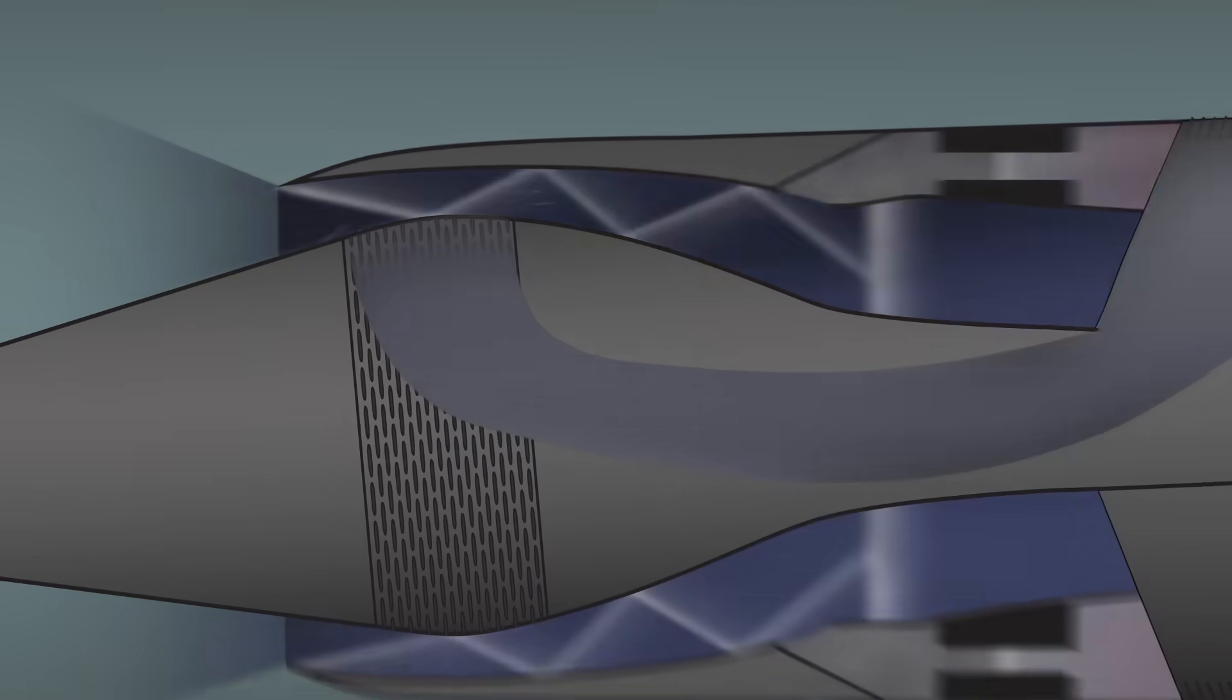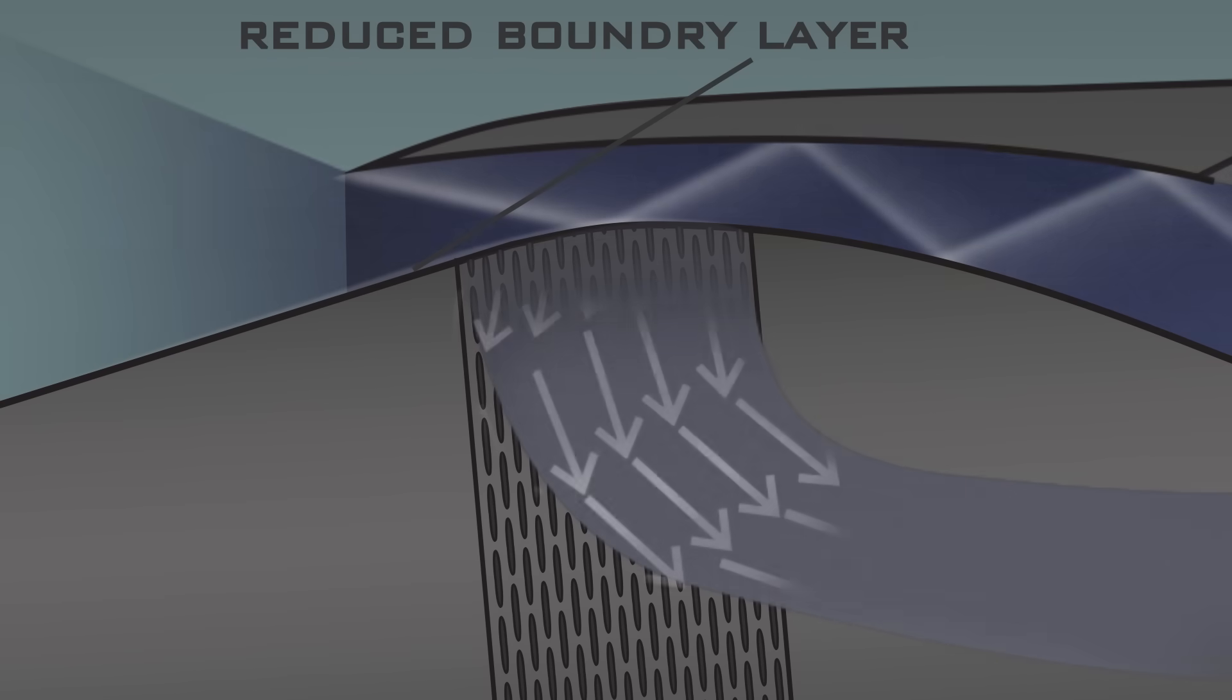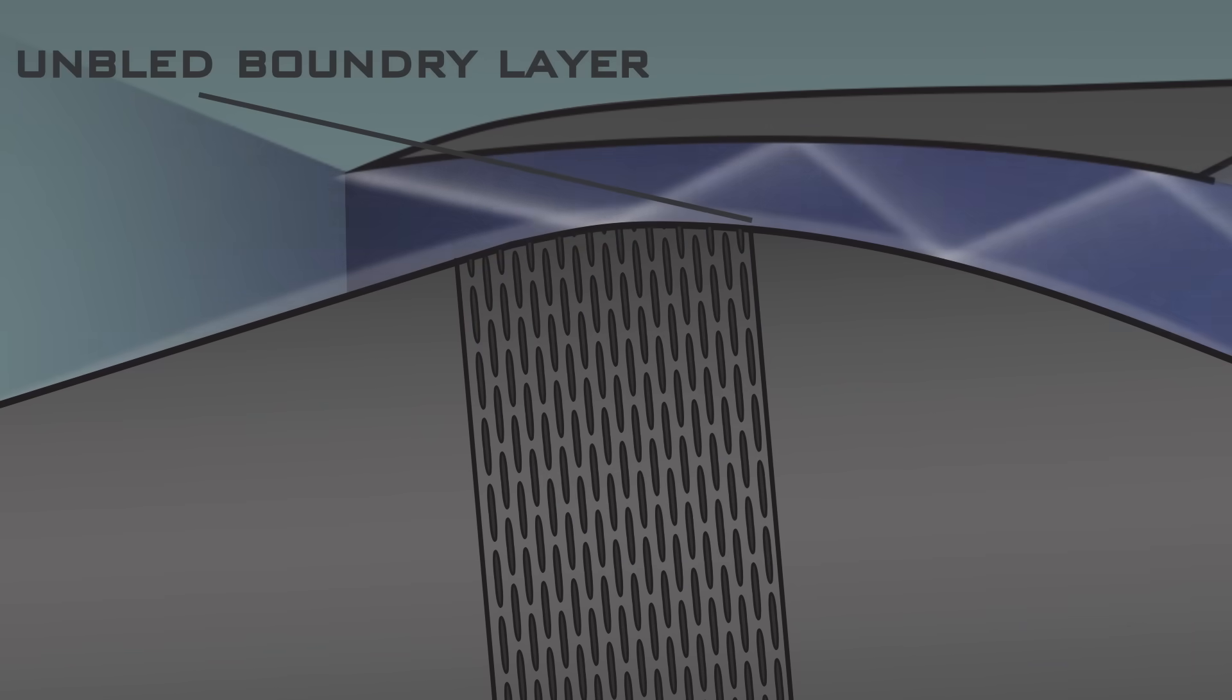While at higher speeds, the bleed wicks away the boundary layer, a layer of low pressure turbulent air that normally sticks to the spike and reduces pressure recovery.